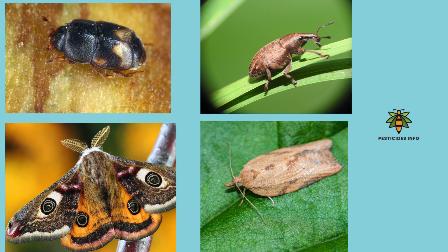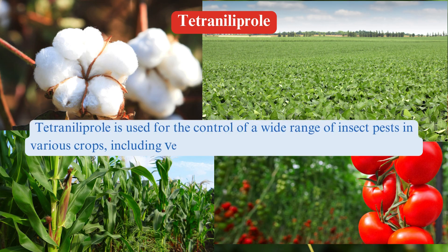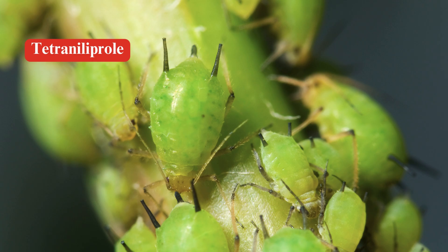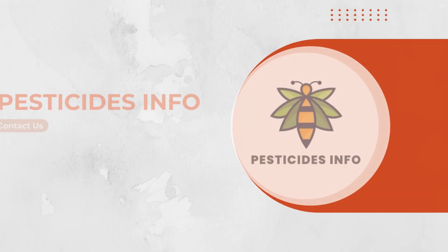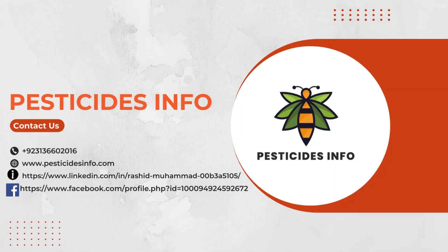Applications include vegetables, fruits, cotton, corn, and soybeans. Tetraniliprol provides both preventative and curative control, making it valuable for integrated pest management programs aimed at minimizing insect damage and maximizing crop yields.